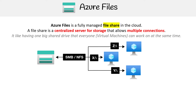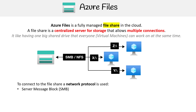Here is a visual representation. The idea is that you're going to be using a network protocol in order to facilitate communication. The two most common ones are Server Message Block (SMB), which was created by Microsoft, and Network File System (NFS), which is very commonly used on Linux or Unix-based file systems.